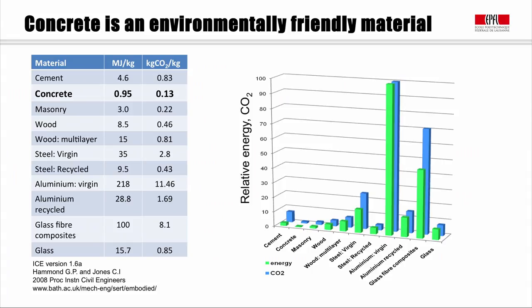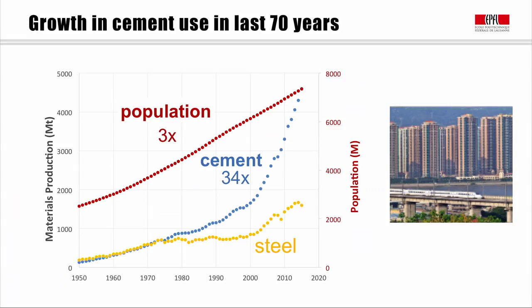Generally, even in that situation, concrete still comes out very strongly as an environmentally friendly material. The amount of cement we're using has increased very dramatically in the past few decades. Since 1950, the population has increased about threefold, and in the same period, the amount of cement we use has increased by about 34 times. In recent decades, this has really been driven by the development in China.